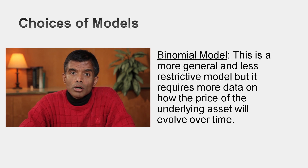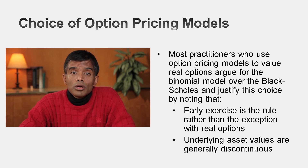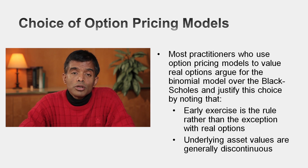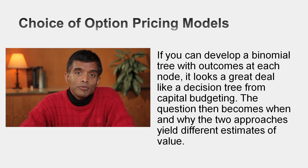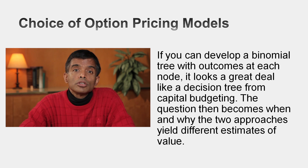The alternative is the binomial model, which is less restrictive — you can have early exercise and even variances changing over time. But the catch is that a binomial model requires you to specify prices at every branch of the tree, demanding a lot more information. Many real options books emphasize that Black-Scholes is ill-suited for most real options, and they're right — most real options have changing variances and require early exercise. But if you can estimate the entire binomial model, there's a far simpler way using decision trees and basic statistics. If you have that information, you don't need option pricing; if you don't, you're stuck with Black-Scholes despite its limitations.